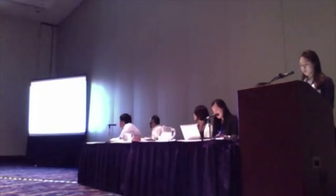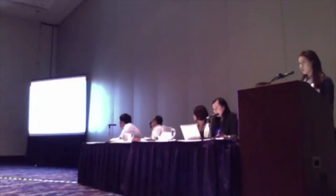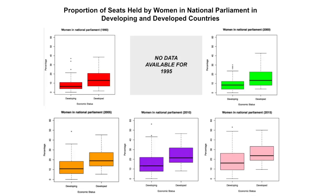The proportion of seats held by women in national parliament was chosen because political power is considered the highest level of women's empowerment by the UN. The UN has five sets of data regarding female empowerment: girls in primary school, girls in secondary school, girls in tertiary or higher education, women in non-agricultural sectors of occupation, and women in national parliament. This particular indicator was initially chosen to see whether slow progress for women was due to lack of political representation on their behalf.